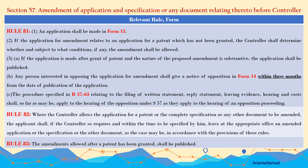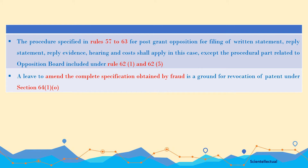The application under Subsection 5 is to be made in Form 13, and the notice of opposition is to be made in Form 14. The relevant rule for hearing is Rule 57 to 63. The procedure specified in Rule 57 to 63 for post-grant opposition covers filing of written statement, reply statement, evidence, hearing, cost, etc., except the procedural part related to the opposition board included under Rule 62. A leave to amend the complete specification obtained by fraud is a ground of revocation of patent under Section 64.